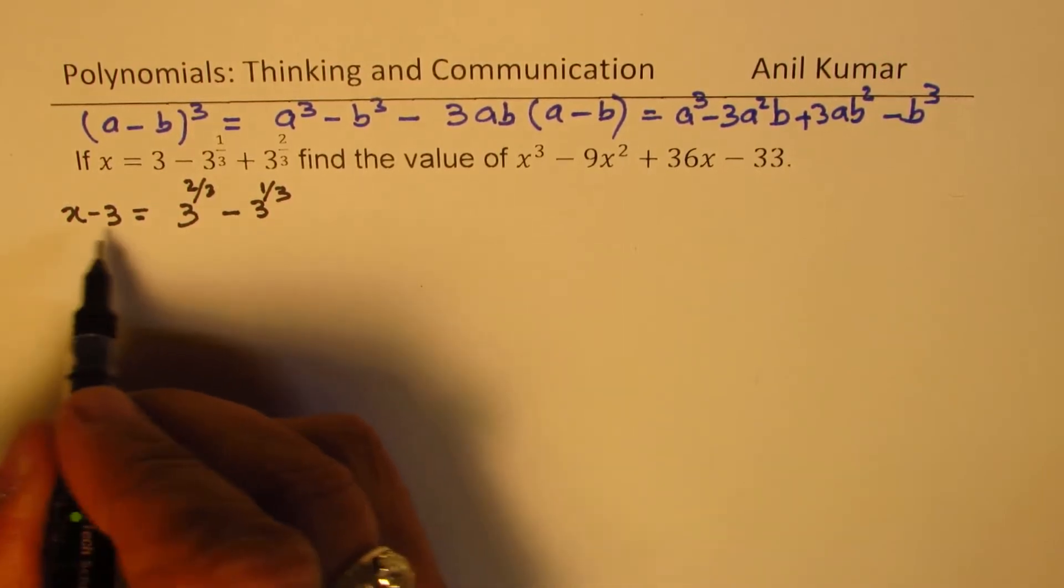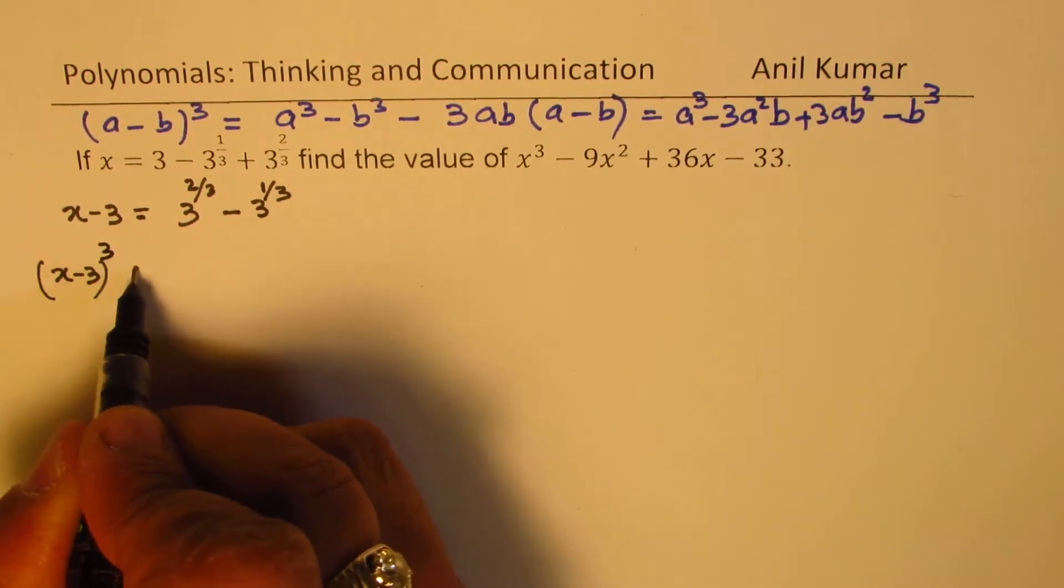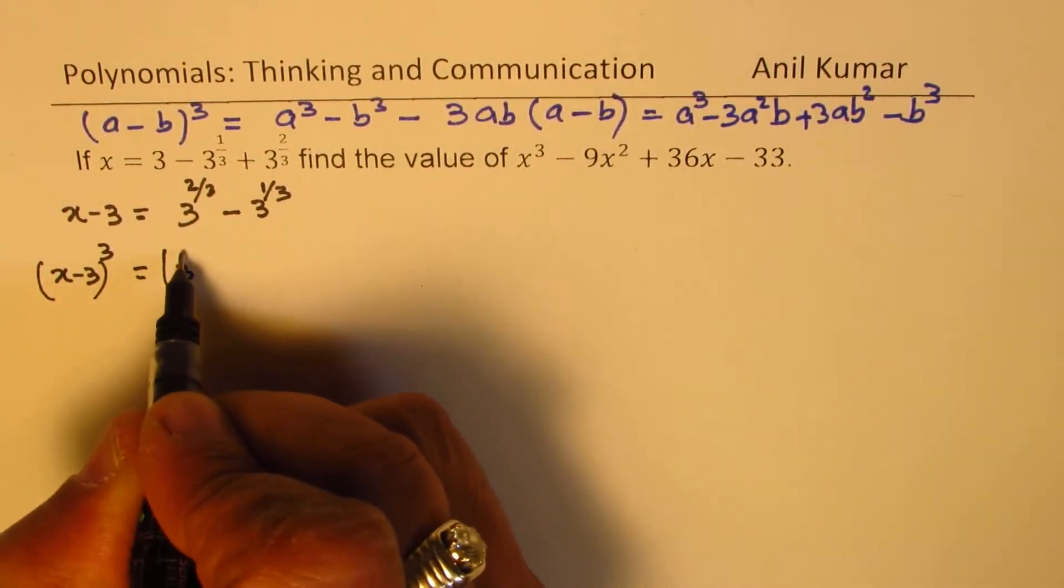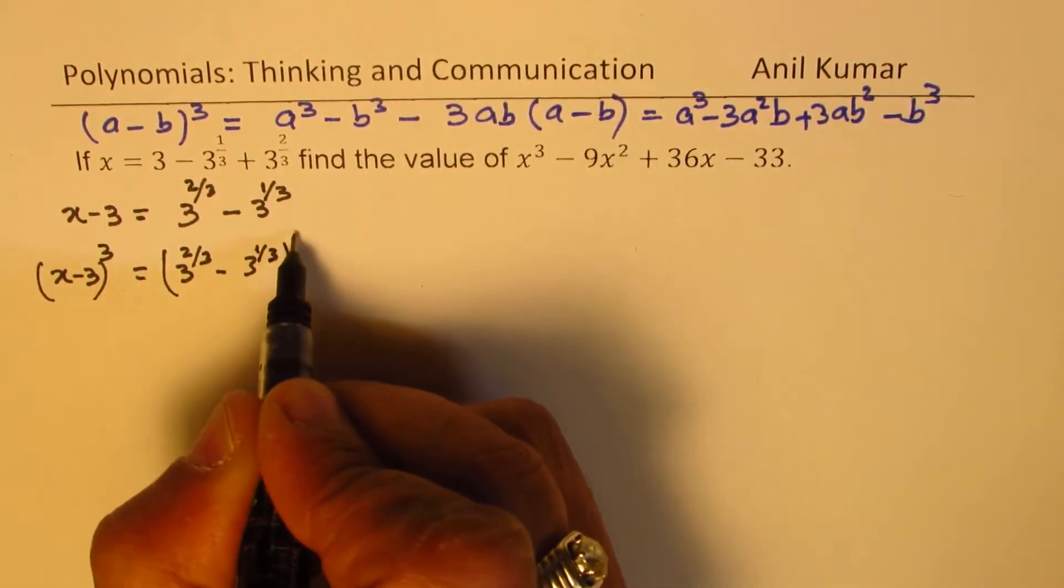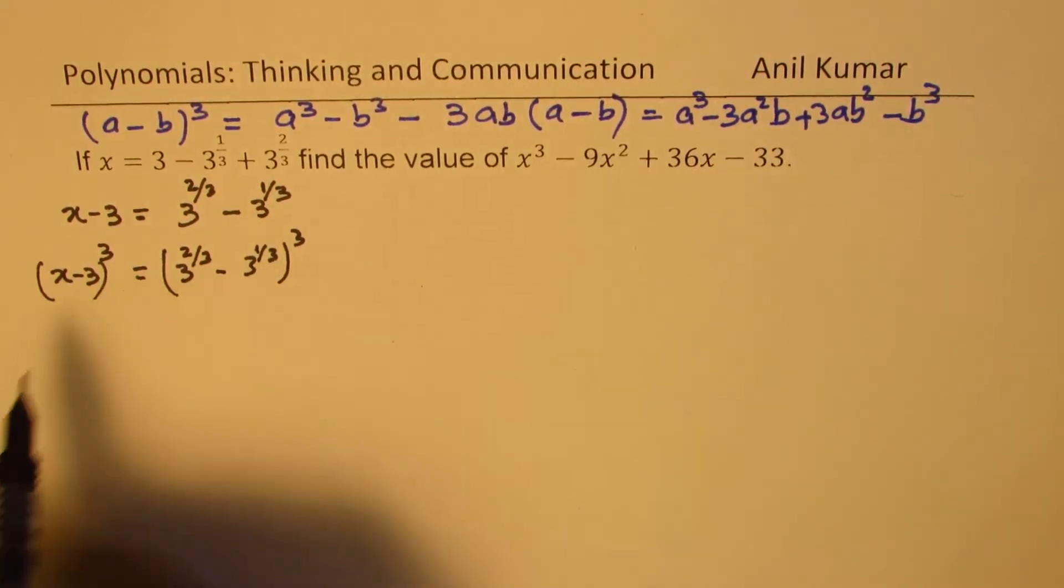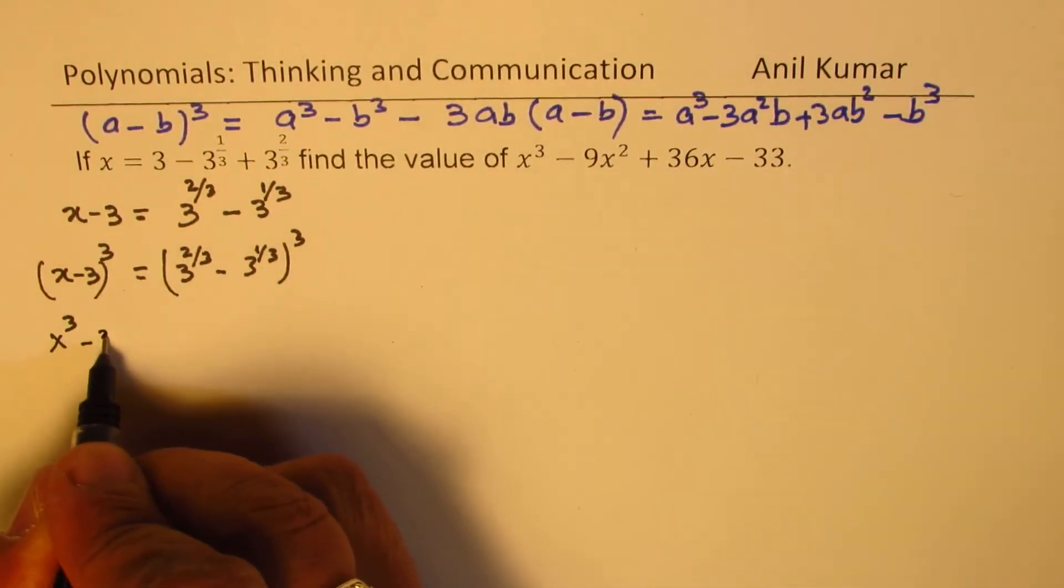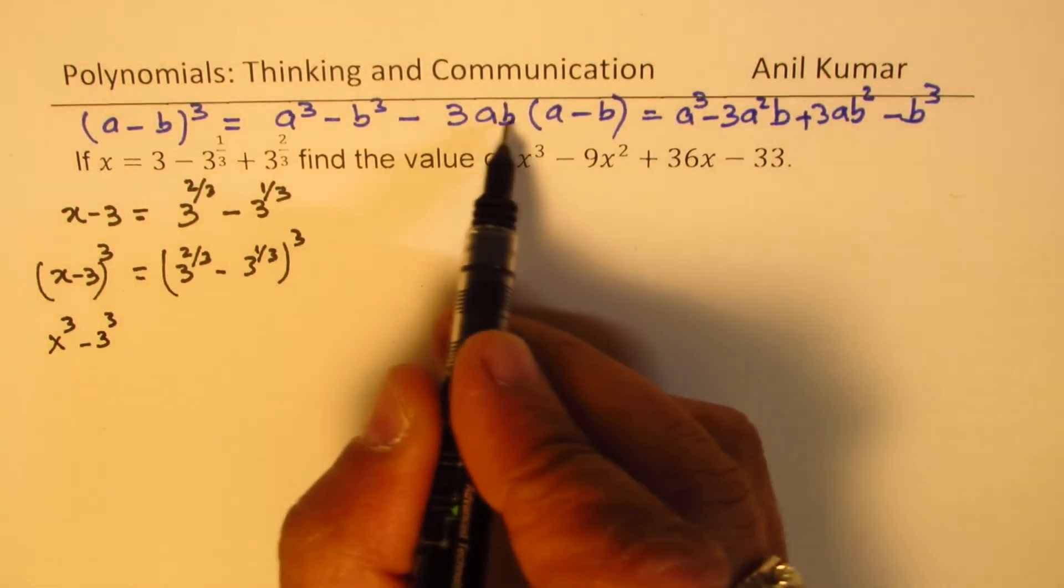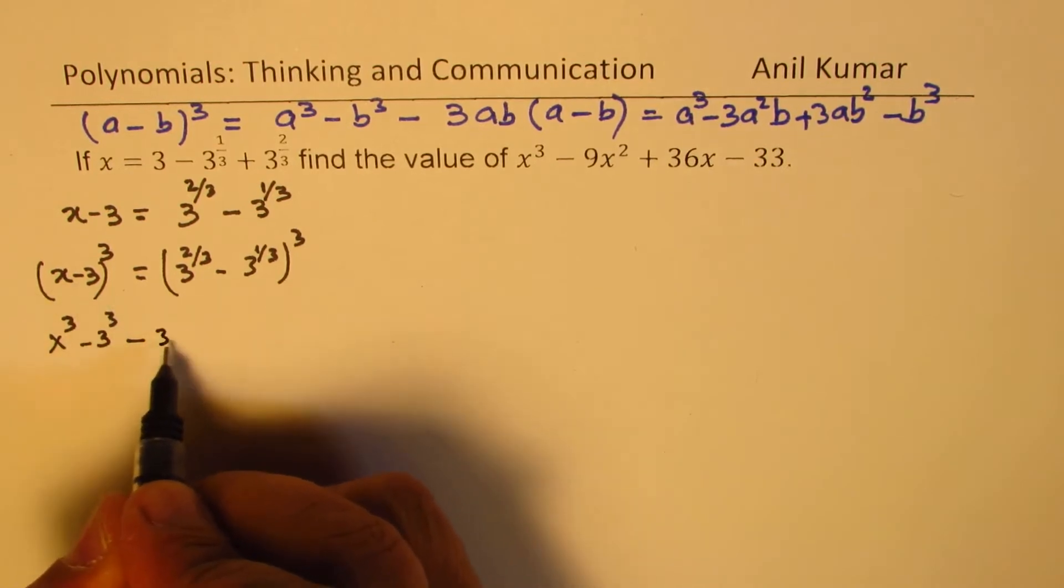Now let's cube both these sides. So we have x minus 3 whole cube equals cube of 3 to the power of 2 over 3 minus 3 to the power of 1 over 3. So when you cube it, on the left side, we get x cubed minus 3 cubed. So we are applying this formula.